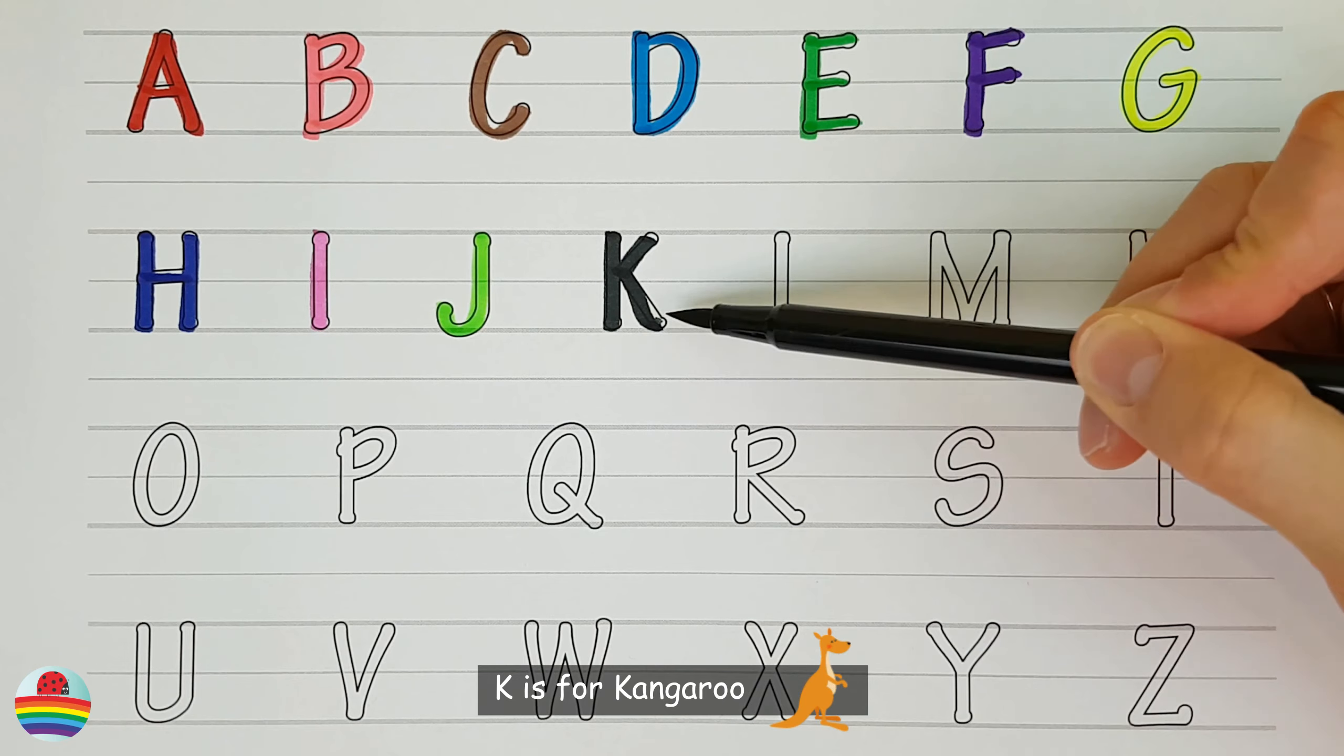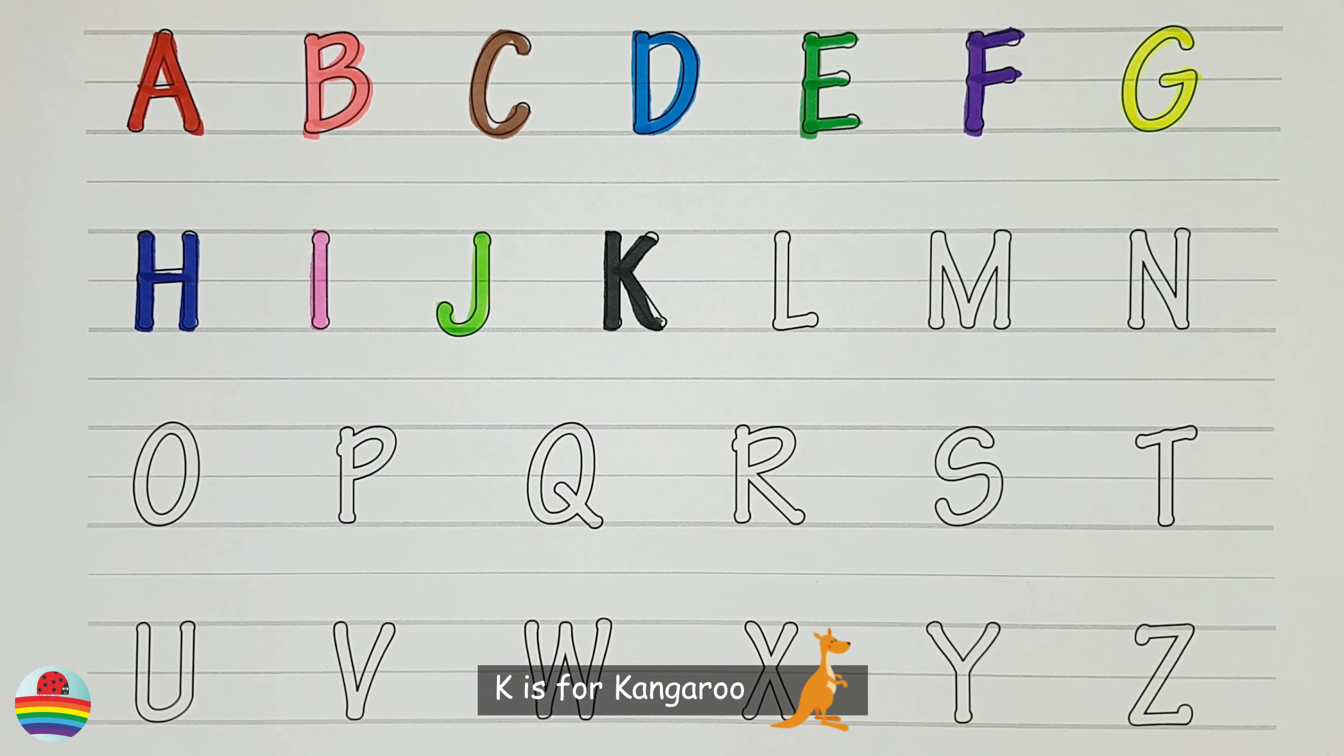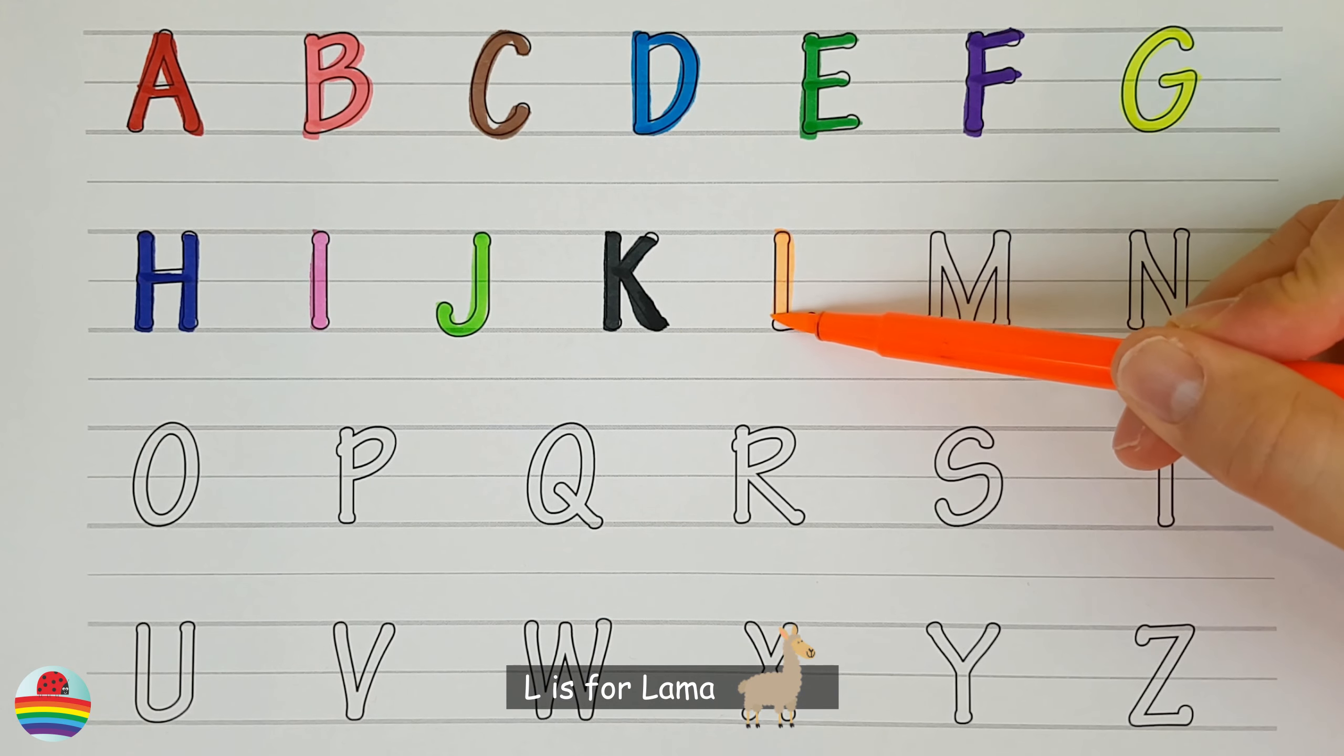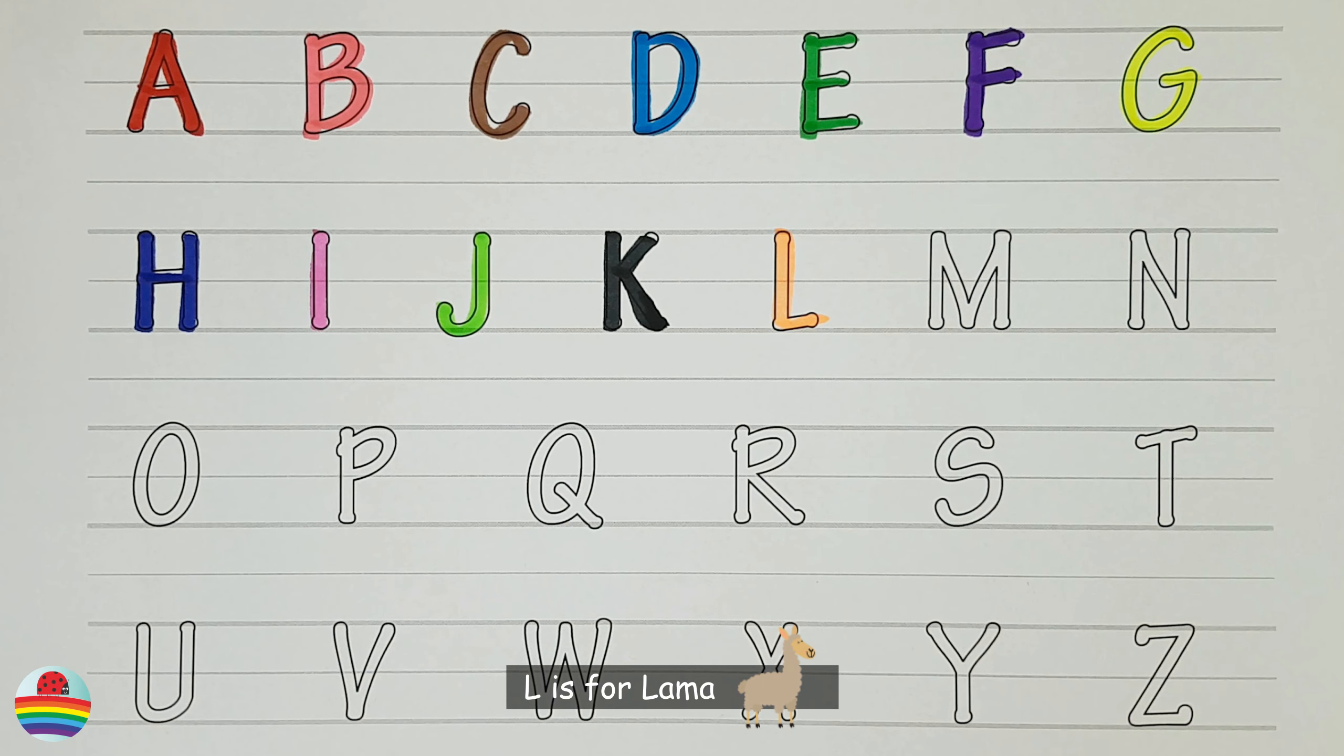I. I is for Indri. I. J. J is for Japanese Crane. J.